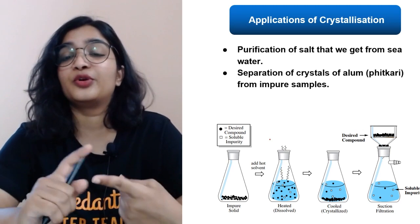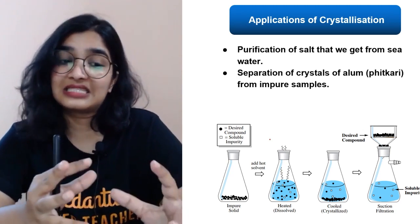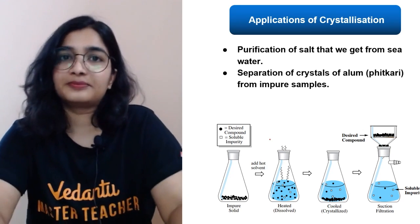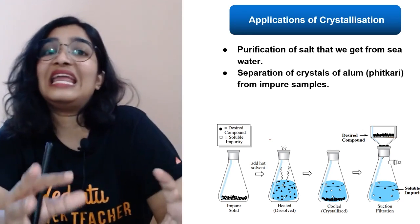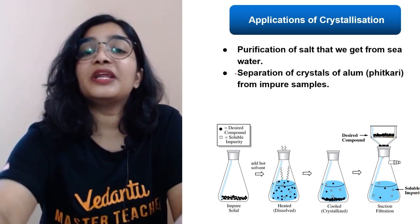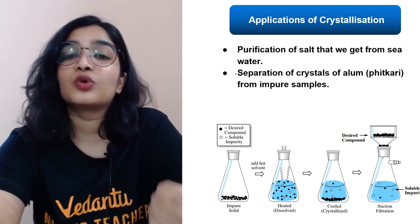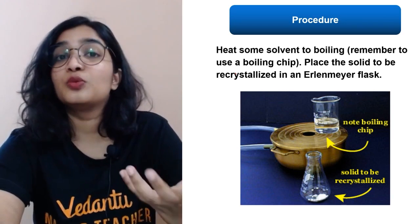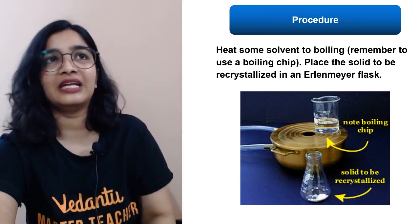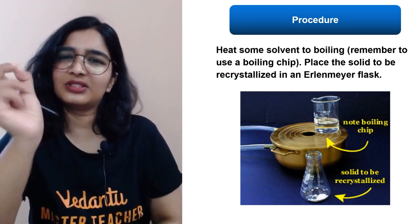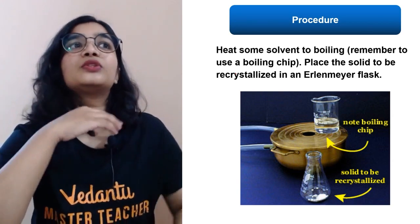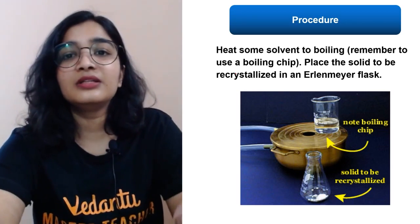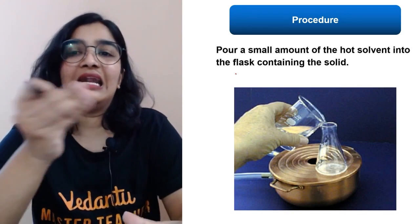Applications of crystallization include purification of salt obtained from seawater — seawater, when evaporated, gives an impure combination of different salts, so crystallization is used to get pure NaCl. Another application is separation of crystals of alum from impure samples. For the procedure: heat some solvent to boiling — in the lab, use a boiling chip to ensure heat is distributed properly.